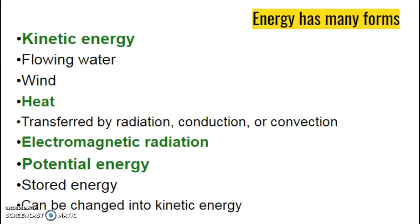Energy has a lot of forms — this should hopefully be review. Kinetic energy is the energy of motion. Potential energy is stored energy that could be turned into kinetic energy. Heat is transferred by radiation, conduction, and convection — that's a specific type of energy. And electromagnetic radiation is a different type of energy, typically a type of kinetic energy.